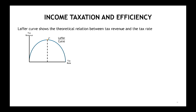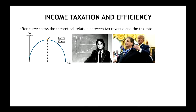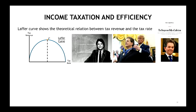The Laffer curve shows the theoretical relationship between tax revenue and the tax rate. There's some rate, T-star, which maximizes government revenue. Art Laffer is an economist who emphasized that by cutting taxes, we might be able to bring in more government revenue. He was given the Presidential Medal of Honor by Donald Trump, and then immediately the New York Times wrote something called 'The Dangerous Folly of Lafferism.'